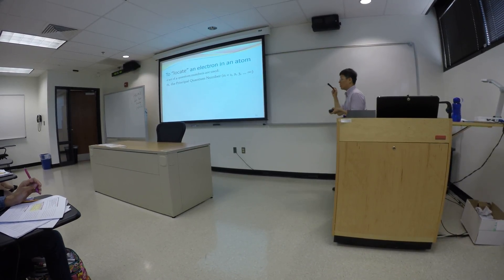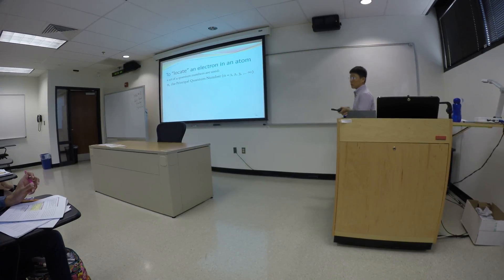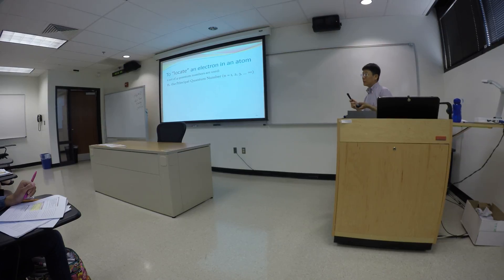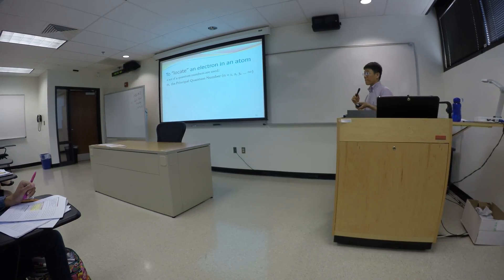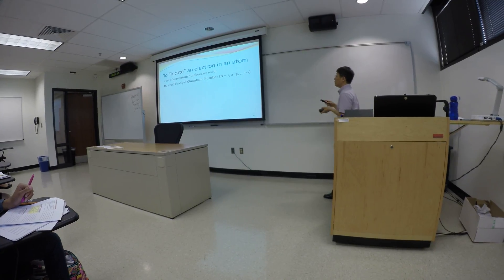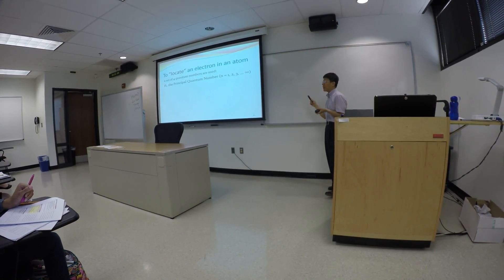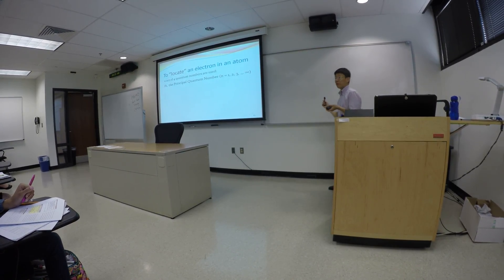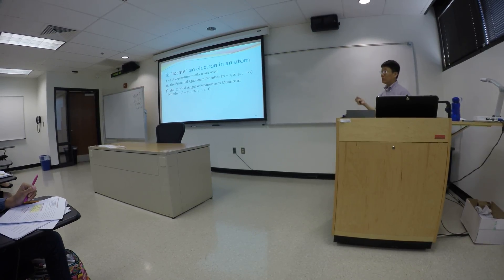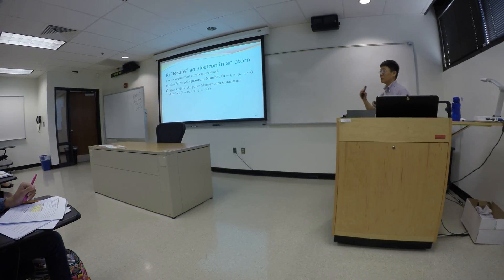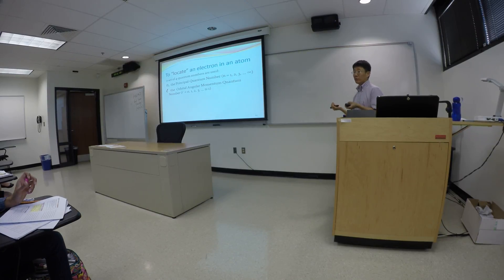En equals negative RHC over n squared. The principal quantum number is an integer. It starts with a value of one, so n equals one, two, three, and can go all the way to infinity. The principal quantum number determines the main energy level, so n is directly associated with how much energy that particular electron has.